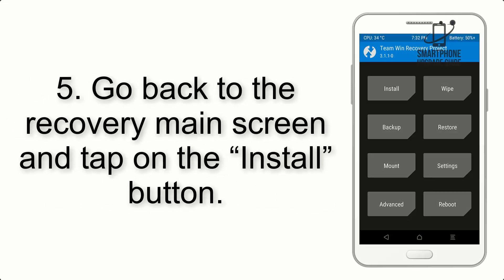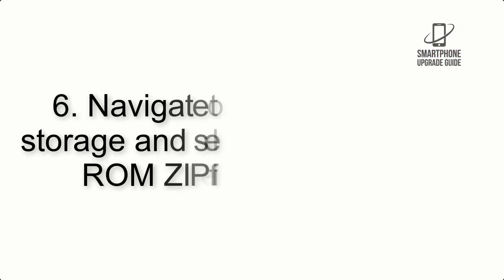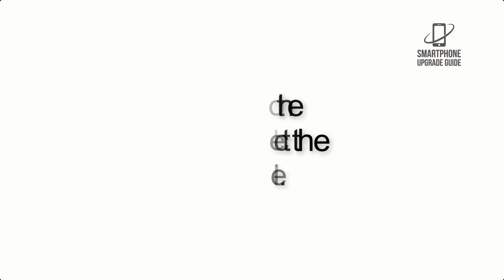Step 5: Go back to the Recovery main screen and tap on the Install button. Step 6: Navigate to the Storage and select the ROM ZIP file.